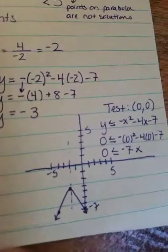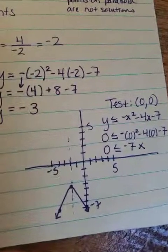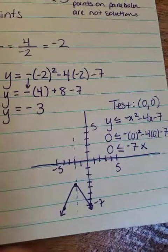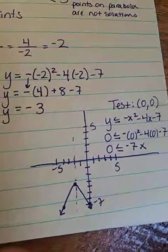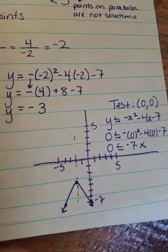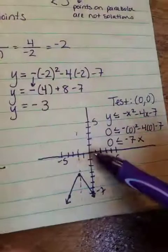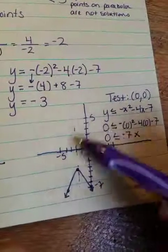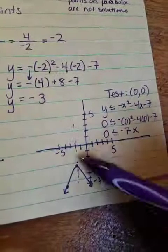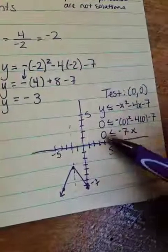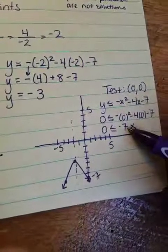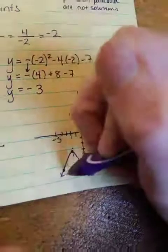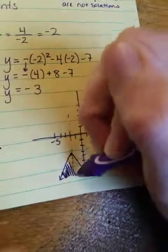So when the answer is false, you shade in the opposite area of where 0, 0, or the point you chose, is found. So 0, 0 is right here. I hope you agree that that is on the outside, we call it, of the parabola. And because this is not true, we shade the opposite side, which in this case means the inside of the parabola.